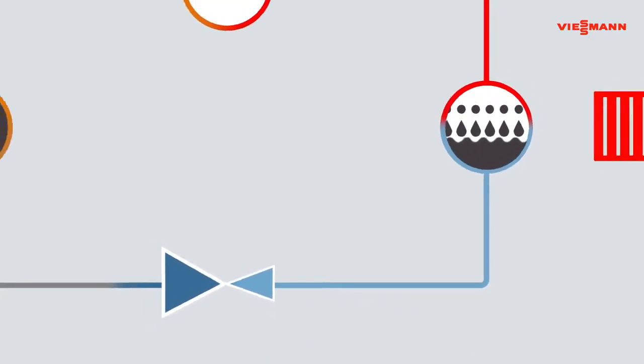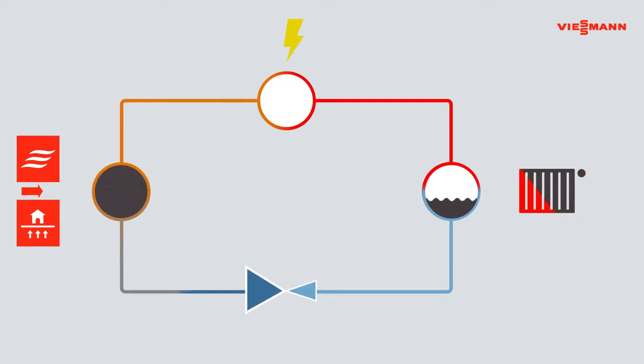The pressure drops via the expansion valve. This causes the refrigerant to further cool down and reach its starting temperature. Then the cycle starts all over again.